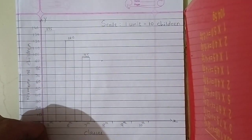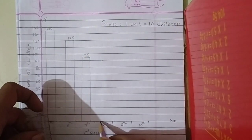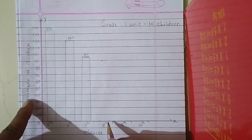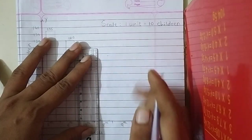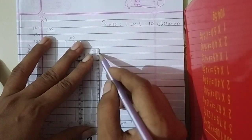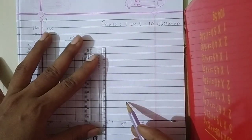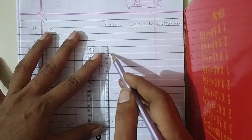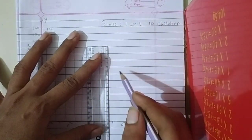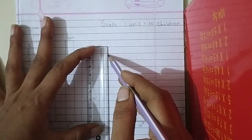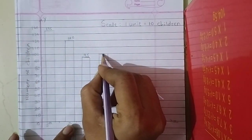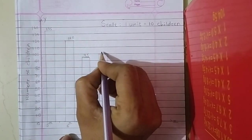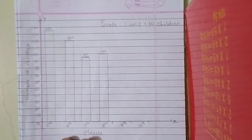Now next, in 8th class, the strength is 100. 100 strength, here. Students, you have to draw, if possible, in the graph paper. I am drawing in this notebook. But if possible, try to draw in graph paper.